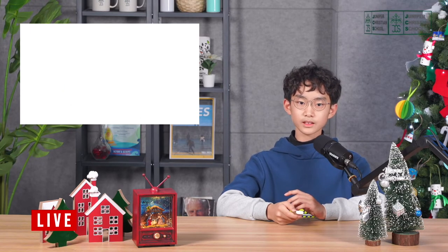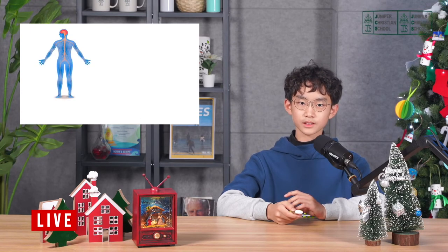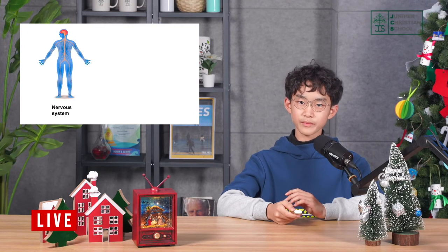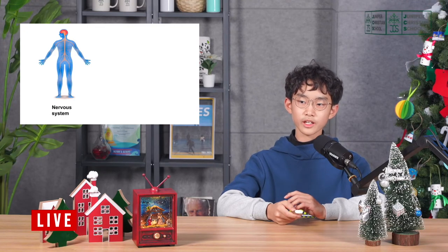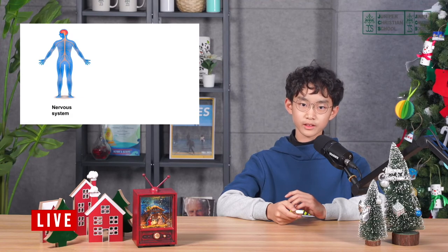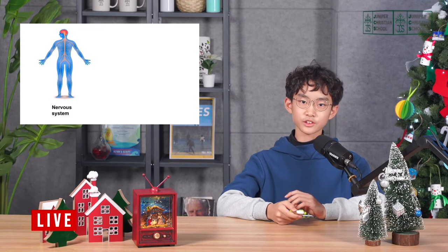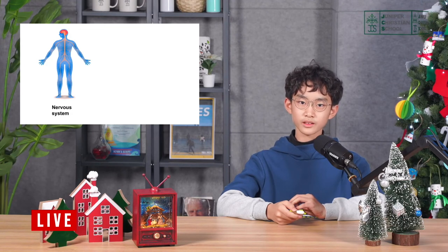The next system is the nervous system. The nervous system is the major controlling, regulatory, and communication system in your body. It is also the center of mental activity such as memory, thinking, and learning.